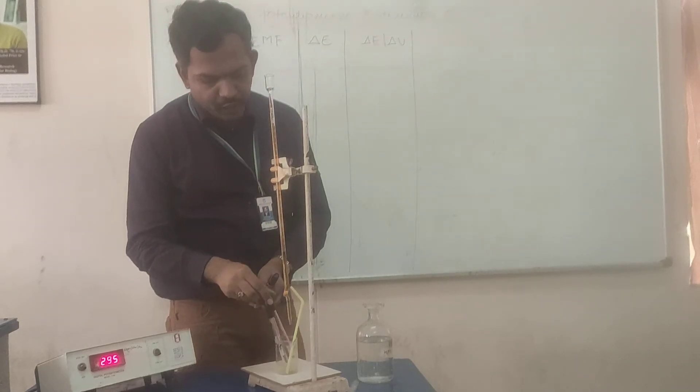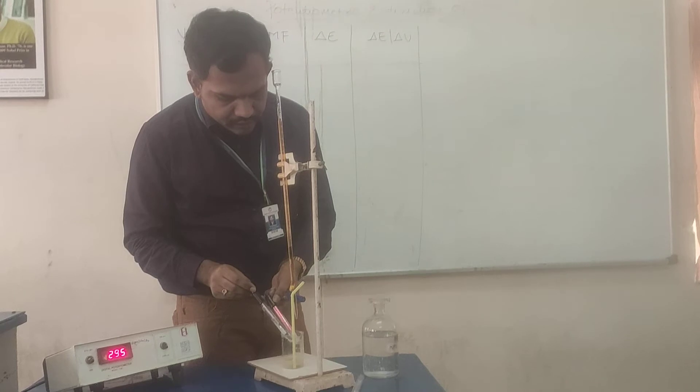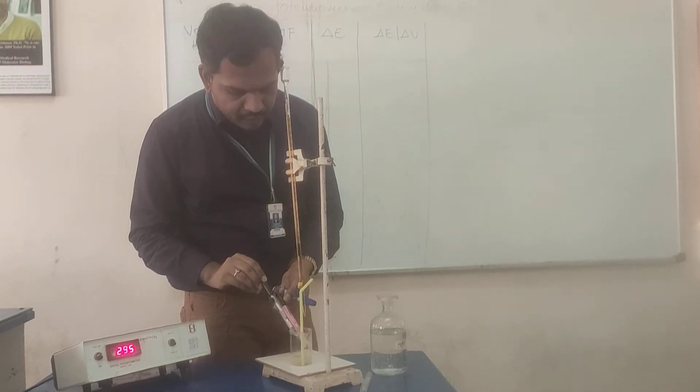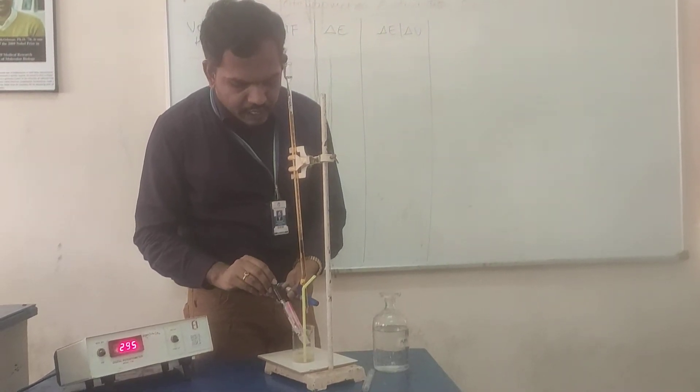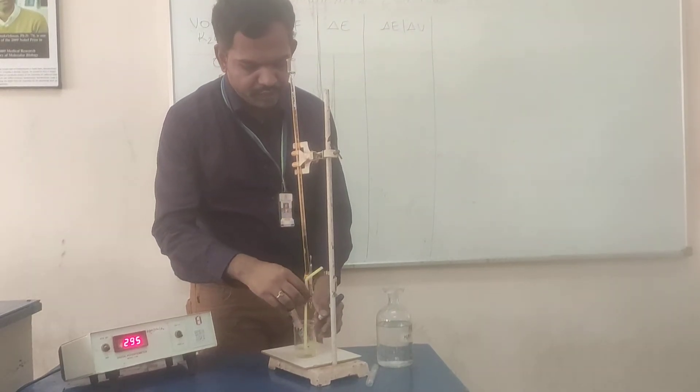And we have got two electrodes. These electrodes, one is indicator electrode, that is platinum electrode. Other one is standard reference electrode, that is standard calomel electrode.